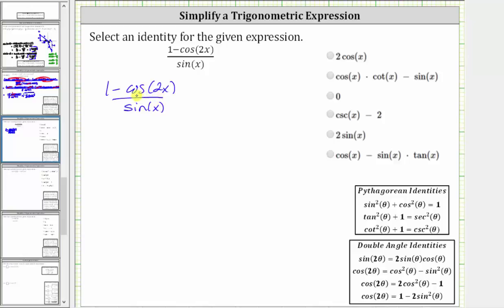To begin, we will perform a substitution for cosine two x. Looking at the identities below, though, we have three choices.